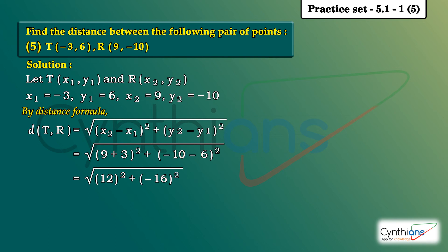Next step D of T comma R is equal to square root of 12 square. 12 square is 12 into 12, which is 144. Plus minus 16 into minus 16: minus into minus is plus, 16 into 16 is 256.